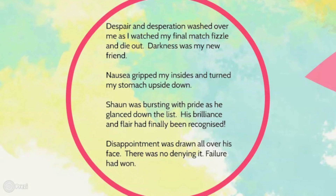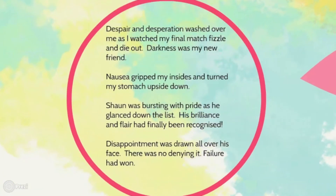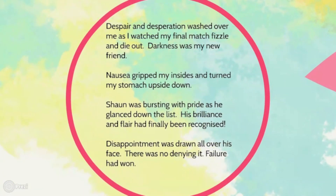Brilliance and flair are attributes that Sean has and therefore abstract nouns. For the last sentence I wrote: 'Disappointment was drawn all over his face. There was no denying it. Failure had won.' Disappointment and failure are both abstract nouns — feelings that character is having — and it makes the writing far more interesting than the original sentences. Also notice the use of metaphors within those sentences, which further adds to the creative writing.